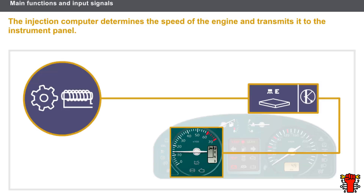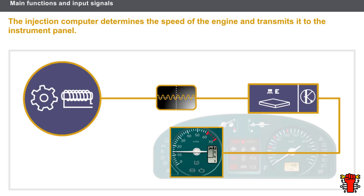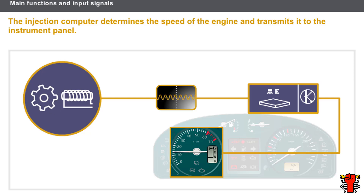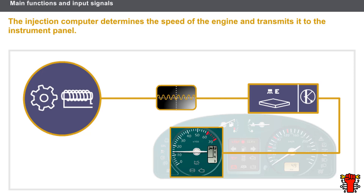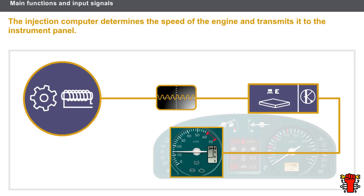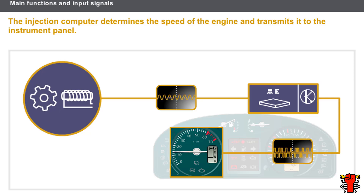Let's now see how a REV counter works. The flywheel sensor sends a signal to the Injection Computer. The Injection Computer determines the speed of the engine and transmits it to the Instrument Panel. Depending on the vehicle model, the signal from the computer may be transmitted directly to the REV counter, or via the multiplex network.